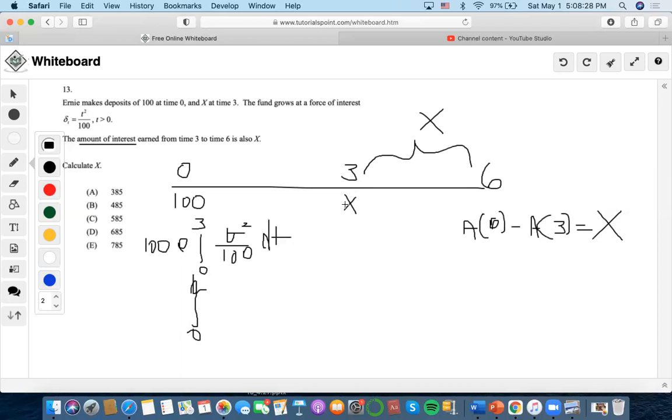And we would have to subtract both values to find the interest earned for this period. We would have to find the accumulation of x at time 6, so we would do x from 3 to 6, t cubed over 100 dt.